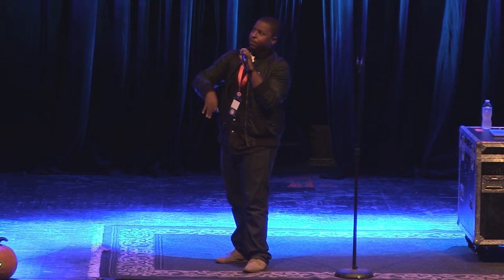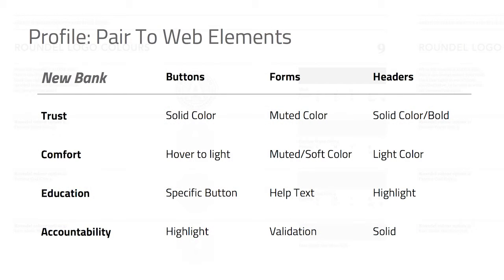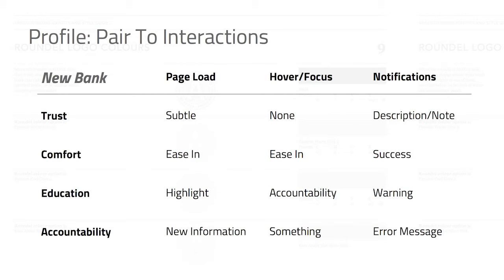Then I dig a little deeper and think about how those core values tie to different web elements. For a button — what's the first thought that comes into my head? For trust, I think about solid color. For comfort, I think about a hover interaction that eases to light. For education, a specific button tied to that value; for accountability, something that highlights. And even with interactions — if you're thinking about trust, you want something subtle; for comfort, something that eases in on page load. It could go as far as you want.